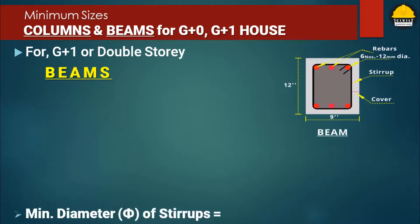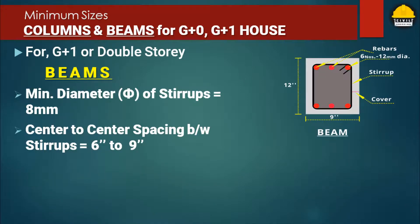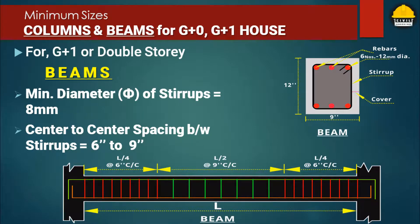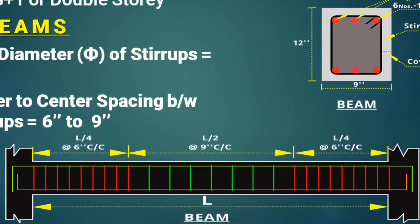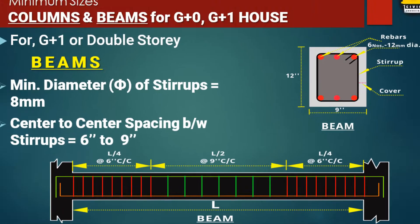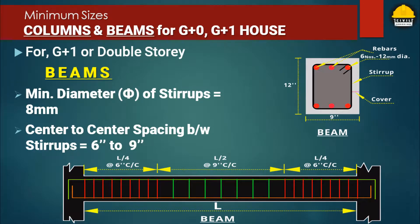These stirrups are to be tied with main steel bars with center to center spacing of 6 inch to 9 inch or 150 mm to 230 mm. The stirrups are placed closely at 6 inch or 150 mm spacing center to center on both sides of the beam and column junction, and the spacing is increased to 9 inch or 230 mm at the middle portion of the L/2 span of the beam. You can also use 6 inch spacing throughout the beam section for achieving better strength against beam bending and shear failure.